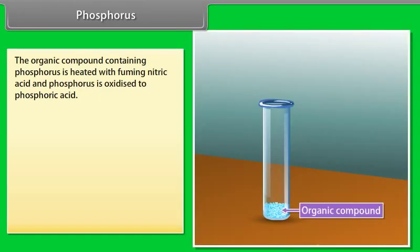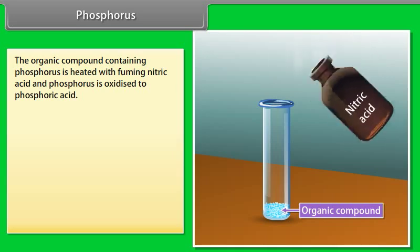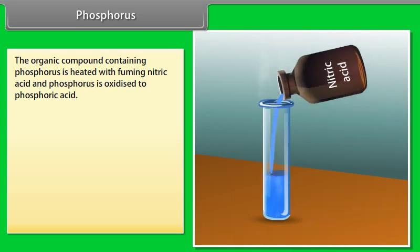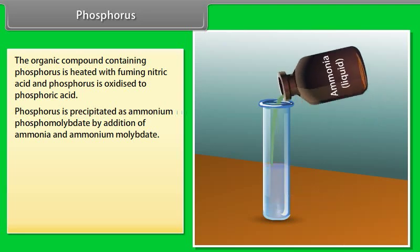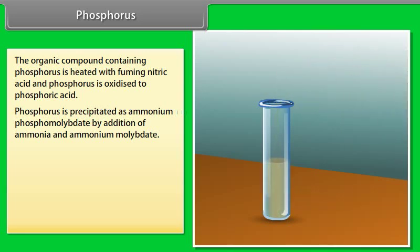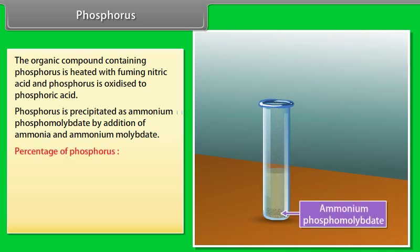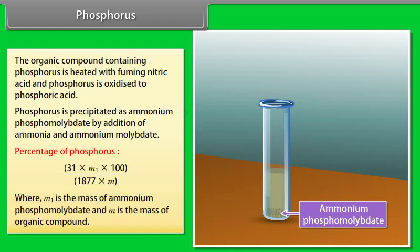Phosphorus: the organic compound containing phosphorus is heated with fuming nitric acid and phosphorus is oxidized to phosphoric acid. Phosphorus is precipitated as ammonium phosphomolybdate by addition of ammonia and ammonium molybdate. Percentage of phosphorus = (31 × M₁ × 100) ÷ (1877 × M), where M₁ is the mass of ammonium phosphomolybdate and M is the mass of the organic compound.